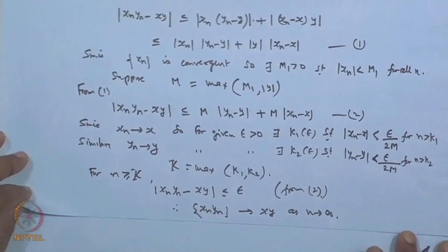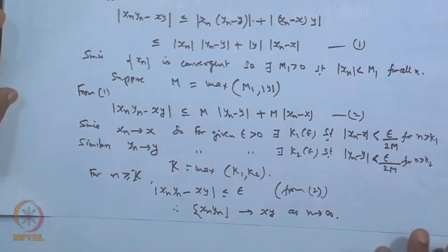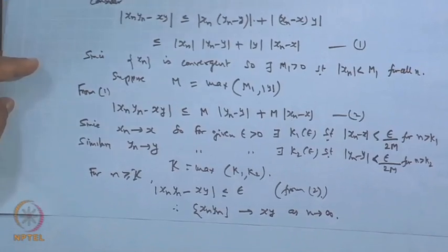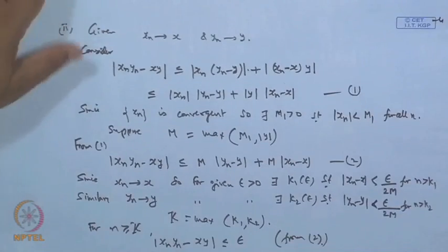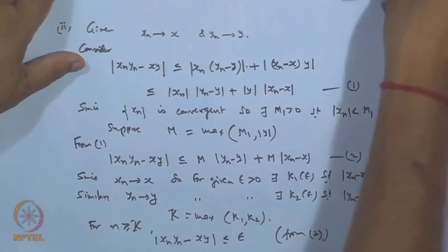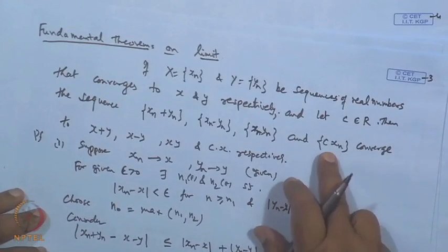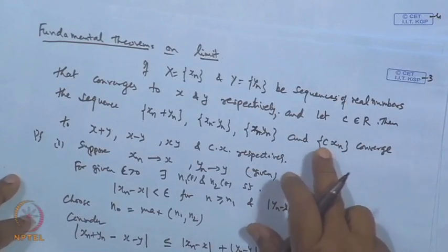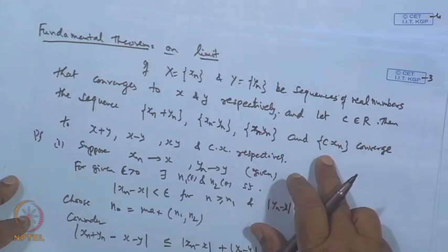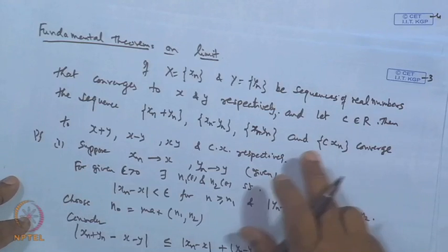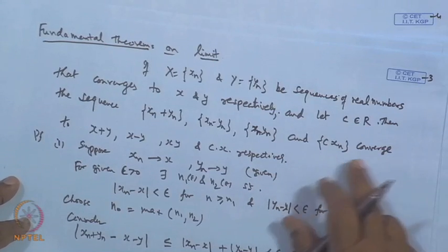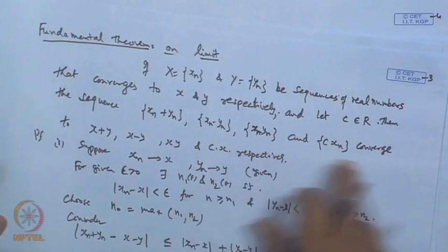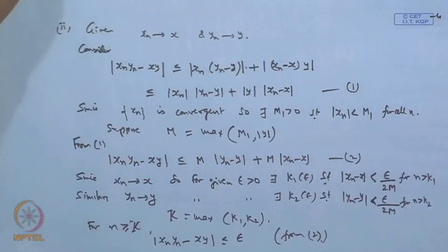Similarly, the sequence c·x_n can be treated by considering y_n as the constant sequence c, which converges to c, and by the product result, c·x_n converges to c·x.